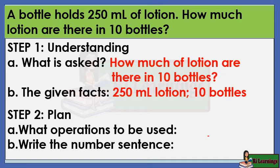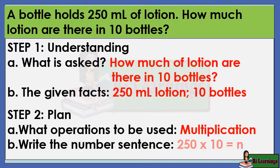Step 2: Plan. What operations to be used? Multiplication. Write the number sentence. 250 times 10 equals N, where letter N corresponds to the total capacity of 10 bottles.